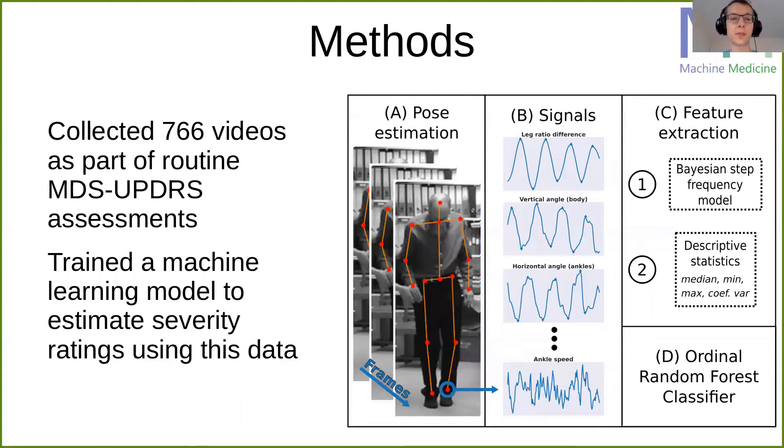Finally, we put those features into an ordinal random forest classifier, and it learned how to predict gait severity impairment.